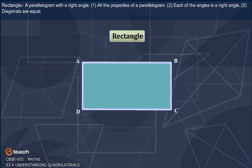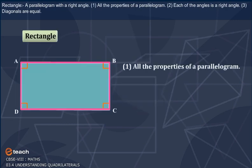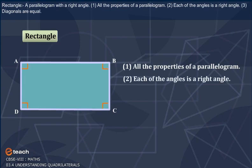Rectangle: A parallelogram with a right angle. All the properties of a parallelogram. Each of the angles is a right angle. Diagonals are equal.